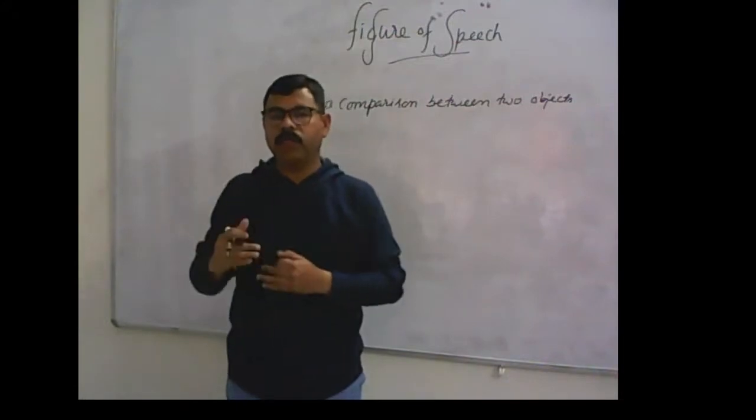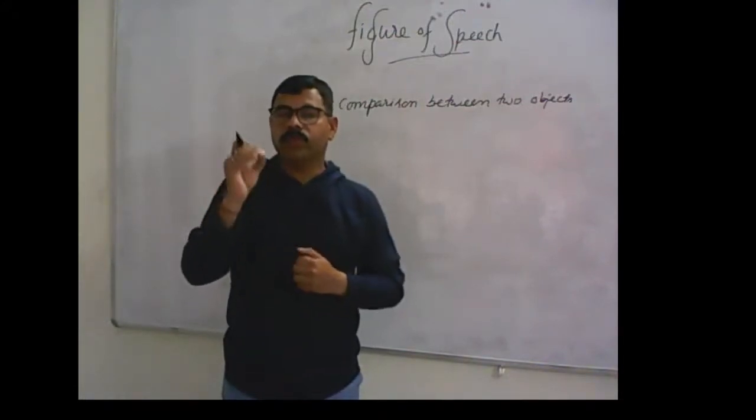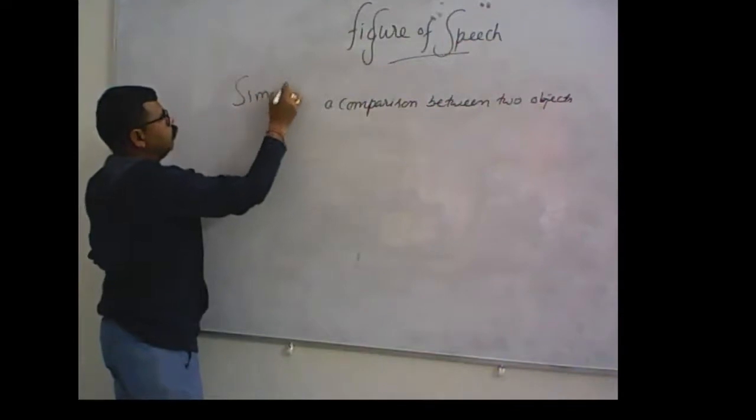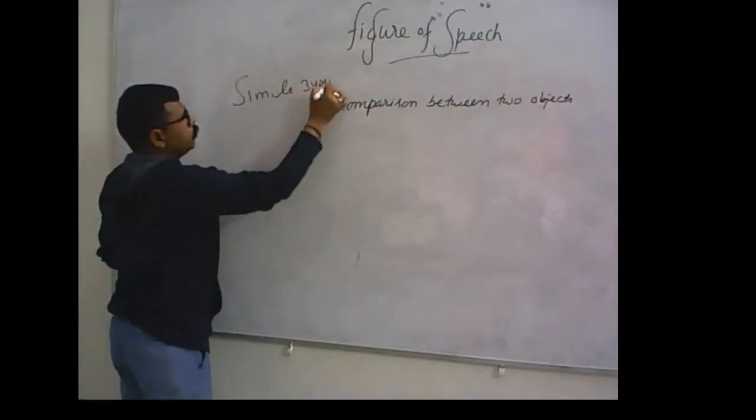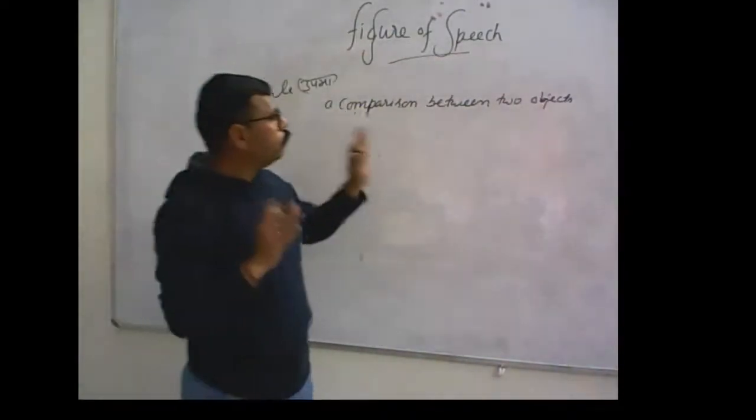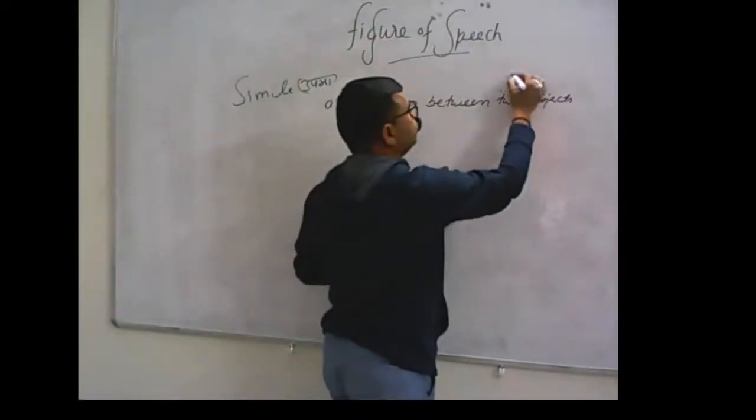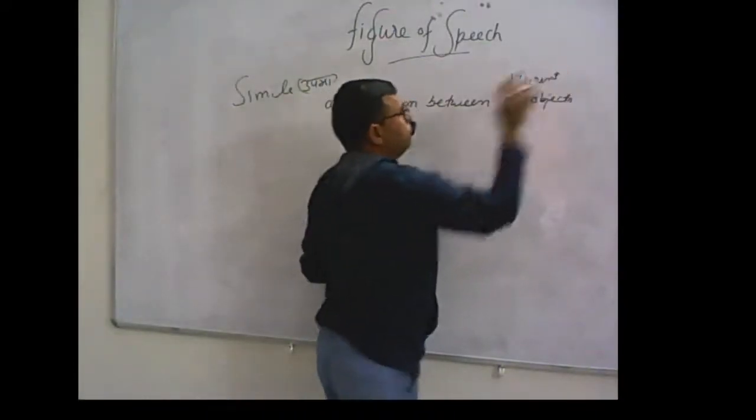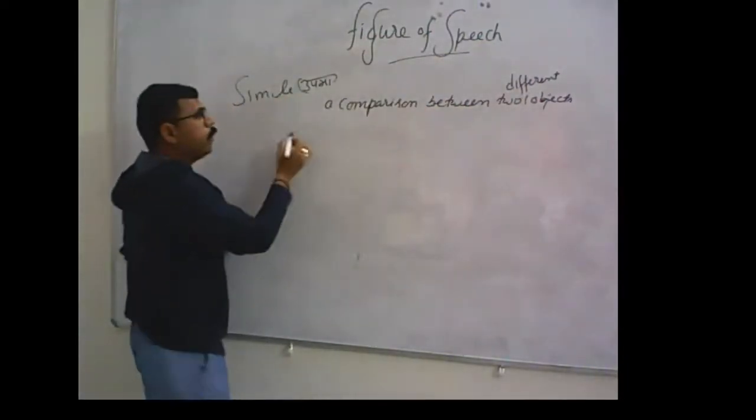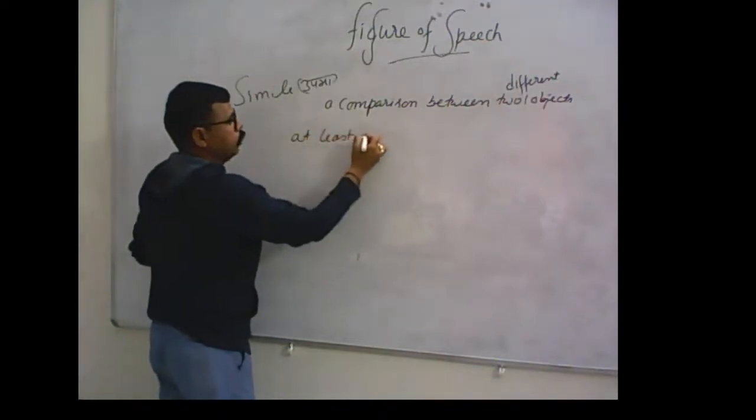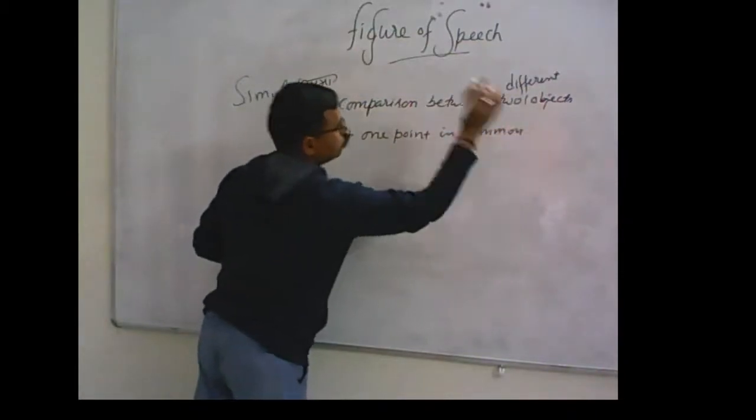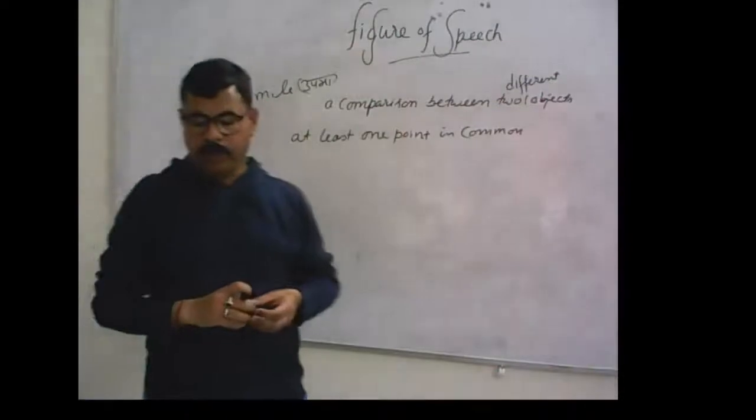First is simile. In Hindi it is called Upma Alankar. In simile, it is a comparison between two different objects which have at least one point in common. For example, life is like a dream.